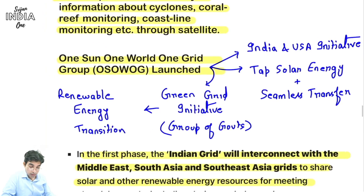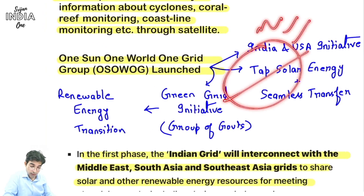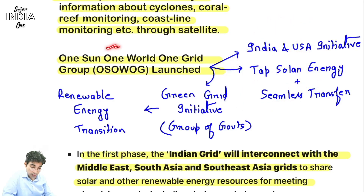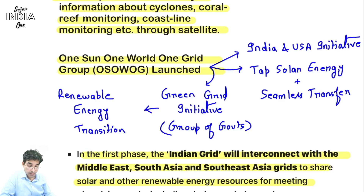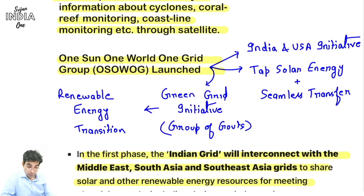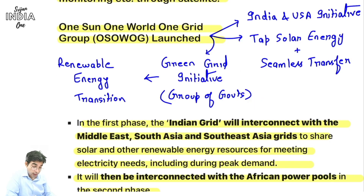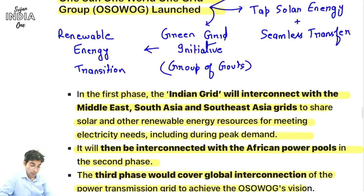Ek aur initiative hua: One Sun, One World, One Grid. Sun toh hai poore Earth mein, sunlight continuously aati hai but change hoti rehti hai - jaise day hai toh sunlight aa rahi hai, jab Earth ghoom jayega toh night ho jayega. Agar hum renewables ka ek grid bana lein taki grid se overall availability, sustainability aur energy ka transmission ho paaye saare logon ke paas toh wo ek bada achha concept hoga. India-USA initiative: One Sun, One World, One Grid - tap karna hai solar energy ko taki seamless transfer ho sake energy ka. Green Grid Initiative bhi ek group of governments hain jo try kar rahi hain renewable energy mein transition ke liye.